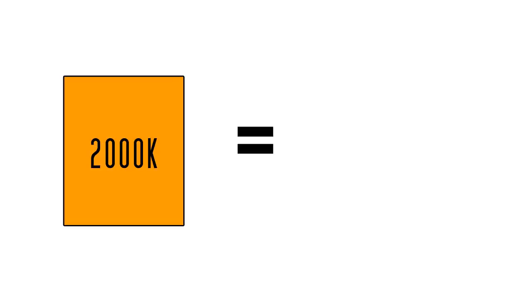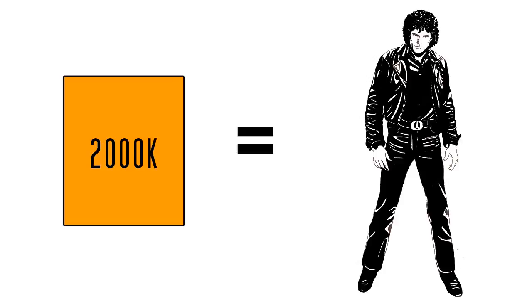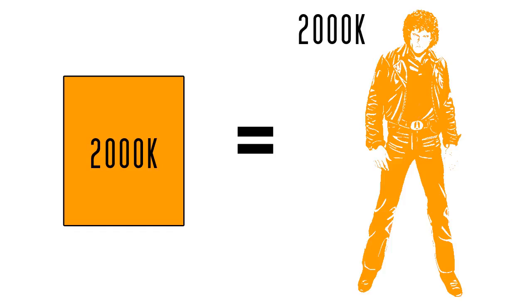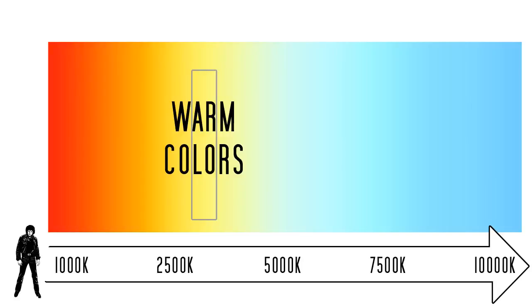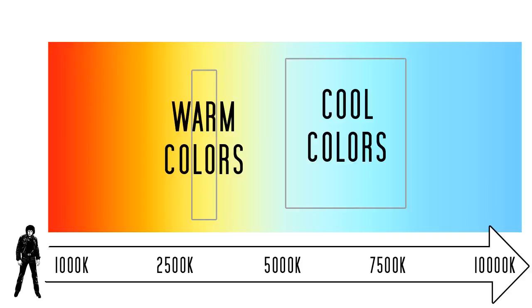A light with a color temperature of 2000 Kelvin simply means it is similar to the light emitted by our black body Steve when warmed up at a temperature of 2000 Kelvin. For commercial lights, color temperature will typically have a value between 1000 and 10,000 Kelvin, with the lower 2700 to 3000 Kelvin range being referred to as warm colors, while higher temperatures over 5000 Kelvin are called cool colors.